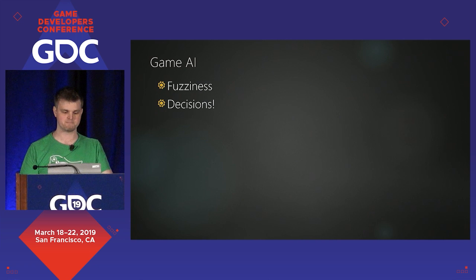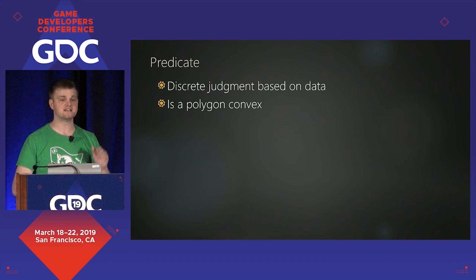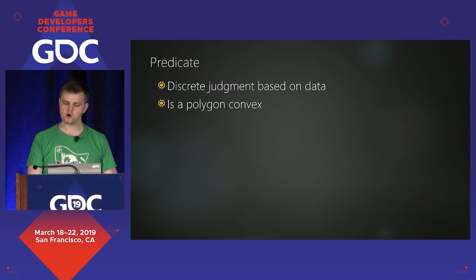There's a related concept in computational math: a predicate. A predicate is a procedure that takes some data — say, the vertices of a polygon — and makes a discrete judgment based on that, like 'is that polygon convex based on the real-valued vertex positions?' Or, when you take data like how far away somebody is and make a discrete decision like 'should I start fighting them?' Both predicates.